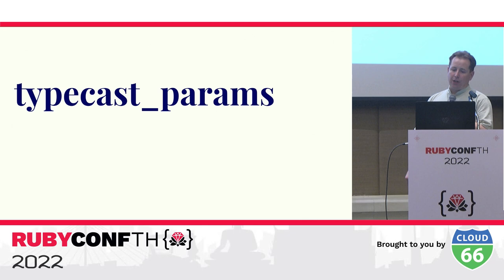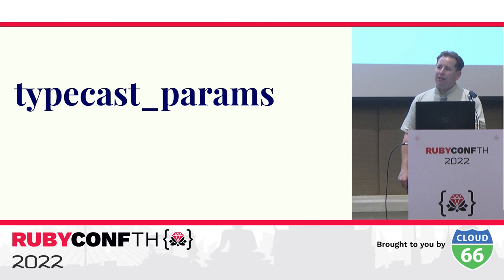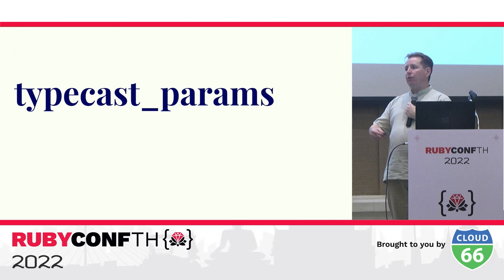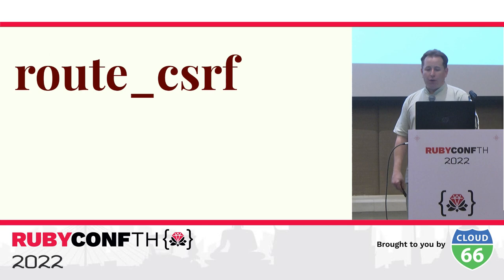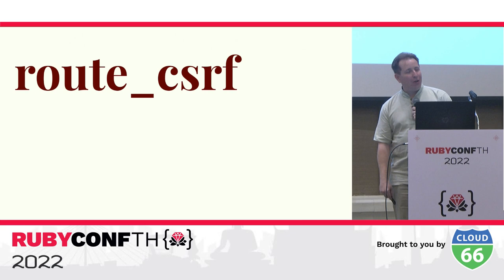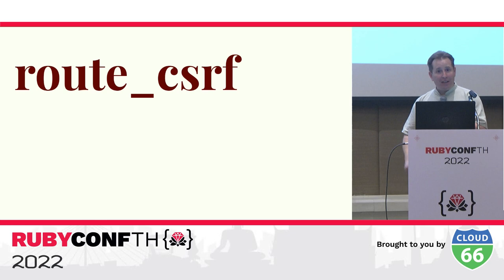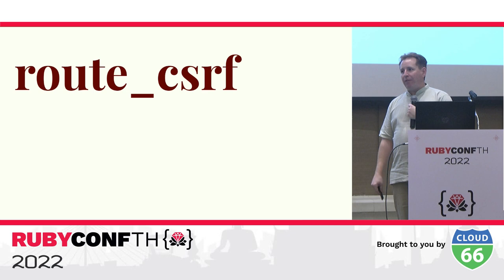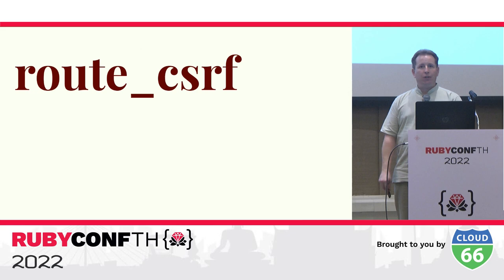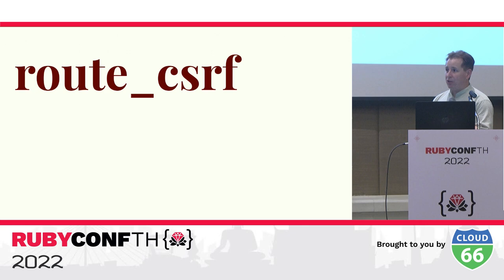Roda ships with a content security policy plugin so you can easily configure an appropriate security policy for your application, customizable on a per-routing-branch basis. Roda also ships with a typecast_params plugin that handles almost all parameter typecasting needs, allowing you to convert submitted parameters to expected types before use. Roda ships with a route_csrf plugin that implements strong cross-site request forgery protection so that all forms need to be submitted with a token valid for the current session, request method, and request path. The protection offered by route_csrf is significantly stronger than the CSRF protection that Rails uses.